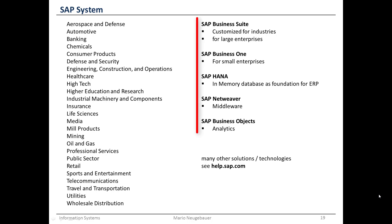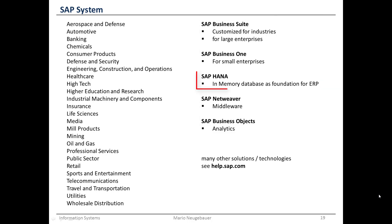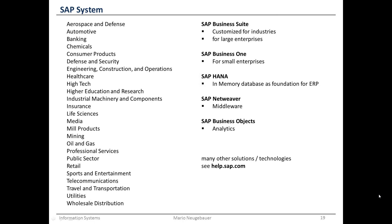On the right side there are some technical aspects, for example SAP HANA. This is a new development from SAP — it is an in-memory database, which means you can much more quickly analyze data for creating reports and for controlling business processes in your company.